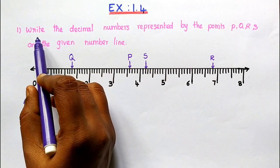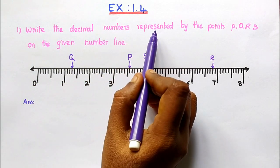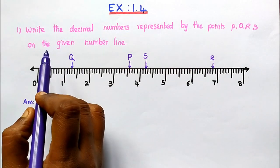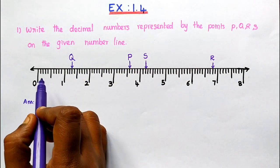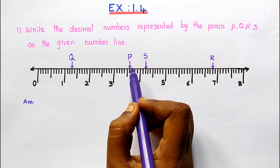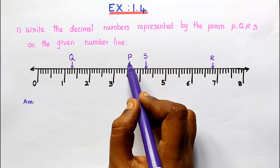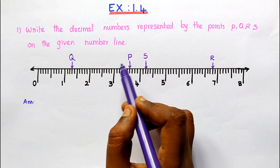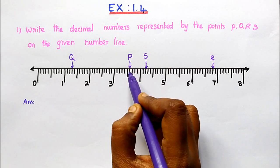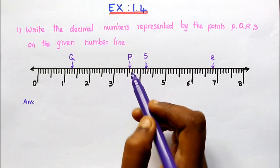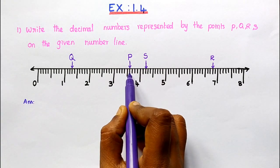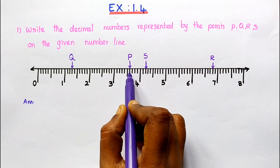First question: Write the decimal numbers represented by the points P, Q, R, S on the given number line. They have given the number line and the points P, Q, R, S. How will you find out? P denotes a small line — this small line.